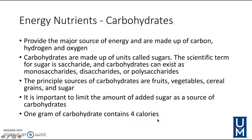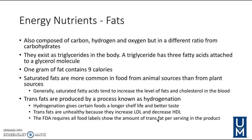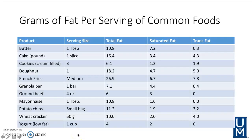The second energy nutrient is fats, which exist as triglycerides in the body — three fatty acids attached to a glycerol molecule. Unlike carbs, one gram of fat contains nine calories, so you're getting more calories per gram. On-screen are examples of grams of fat per serving of common foods, so you can calculate caloric content using that nine-calories-per-gram figure.